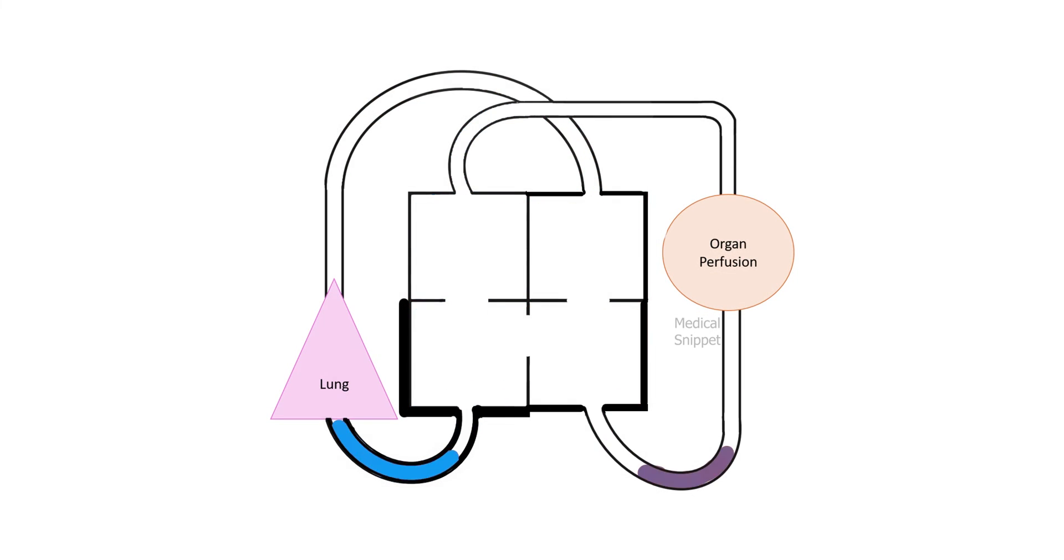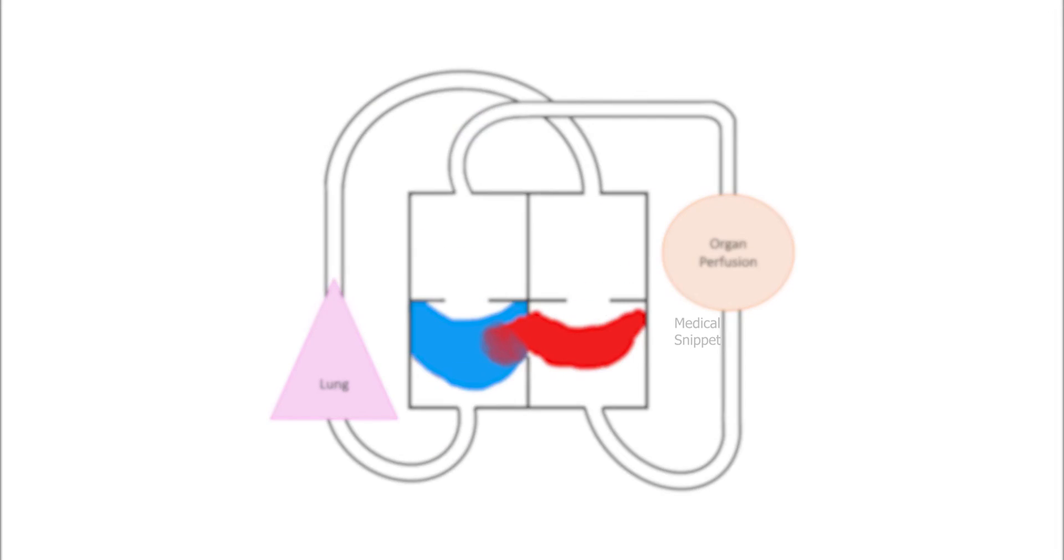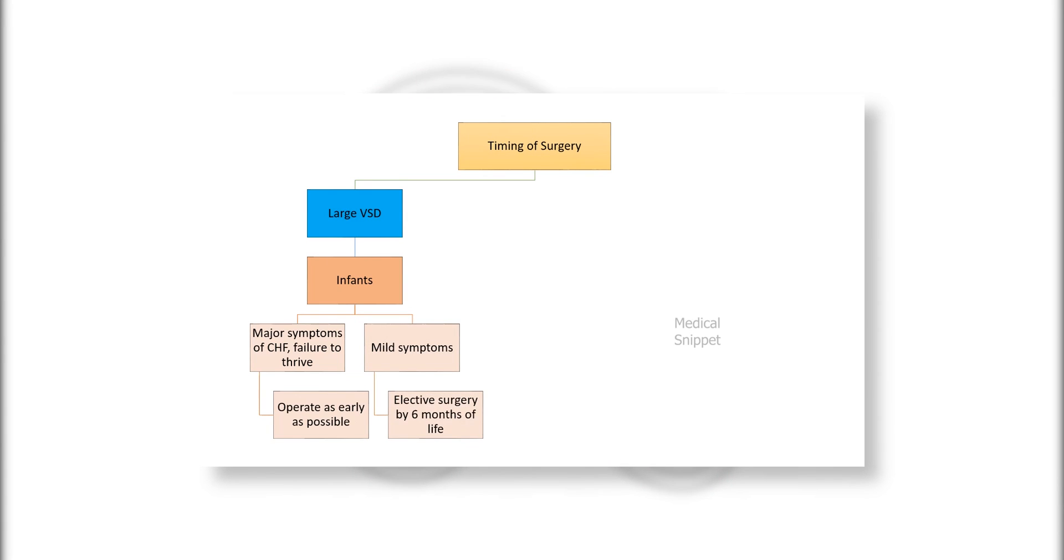So to prevent these complications, VSD must be closed at appropriate time. In case of infants with large VSD having major symptoms of congestive heart failure and failure to thrive, surgery is indicated as early as possible. In infants with large VSD with mild symptoms, VSD can be closed by 6 months of age.